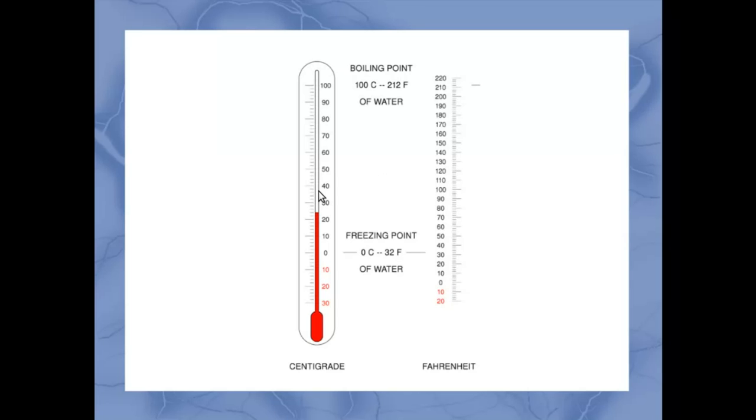As a matter of fact, for every five degrees we have on the Celsius scale, you can fit in nine degrees on the Fahrenheit scale. And we'll look at a few different examples of that.